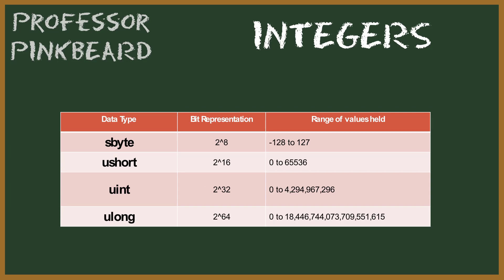C# also has unsigned integers. The sbyte is the signed version of the byte, still holding values in the 2 to the 8th range but split between negative and positive. ushort, uint, and ulong, however, are unsigned integers, meaning they use all of their 2 to the 16th, 2 to the 32nd, and 2 to the 64th bit representations to go from 0 to the absolute maximum value that each data type can store.